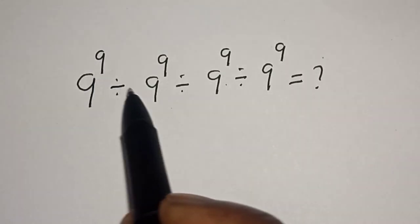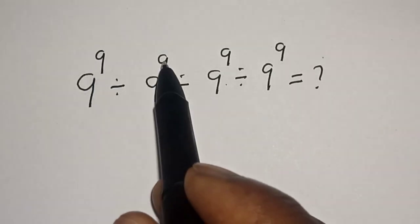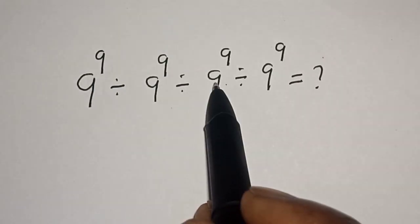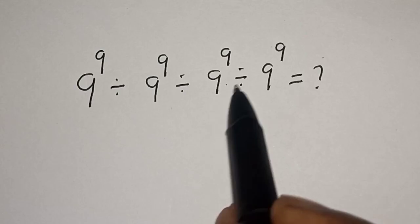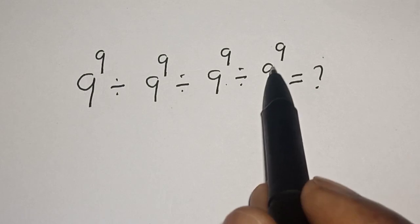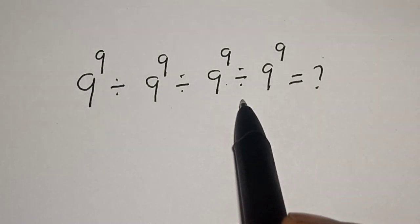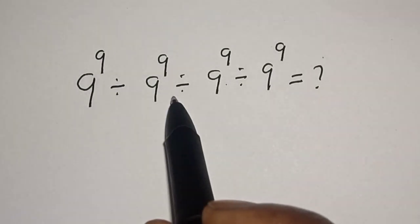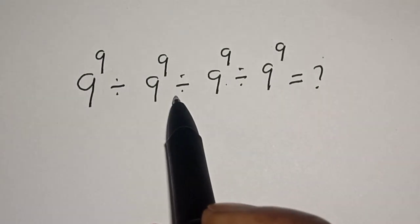9 raised to power 9 divided by 9 raised to power 9 divided by 9 raised to power 9 divided by 9 raised to power 9 is equal to what? Hi everyone, welcome to my class.